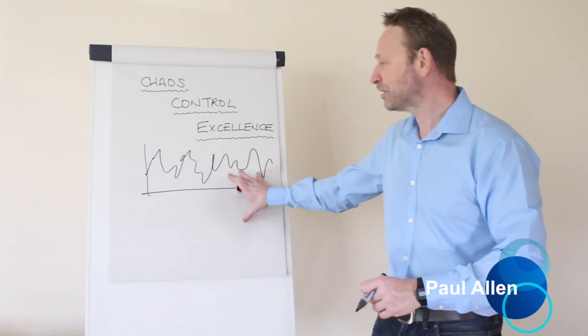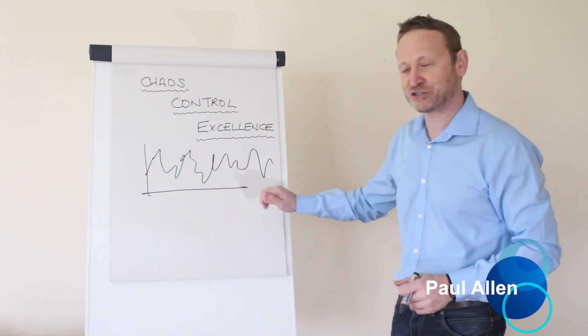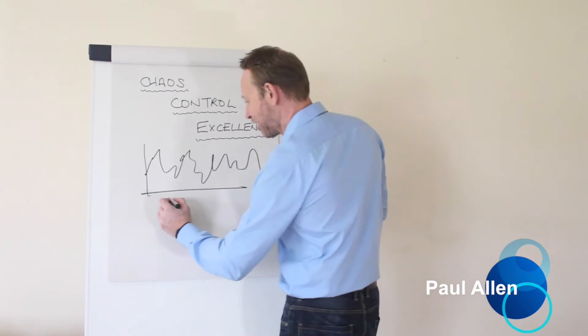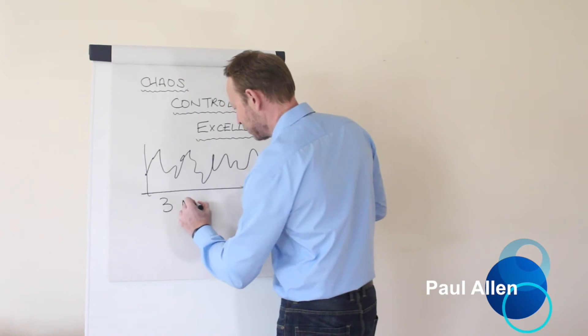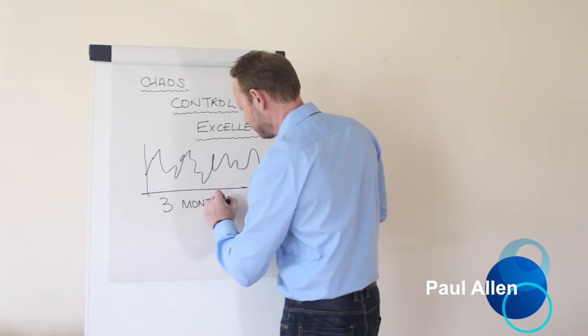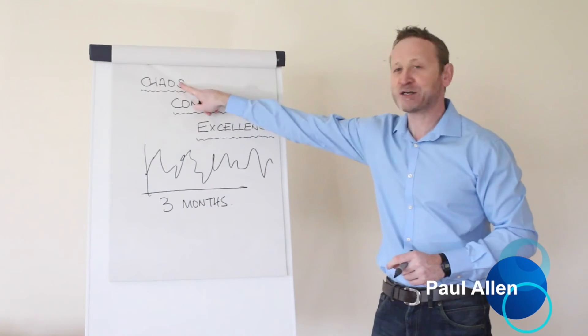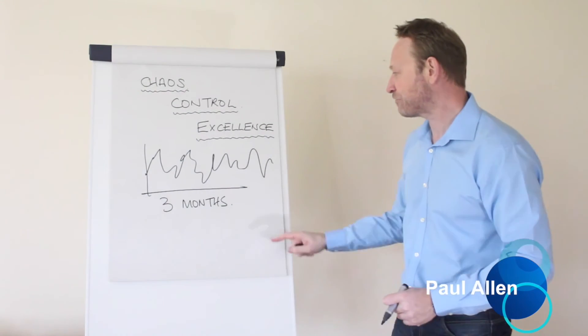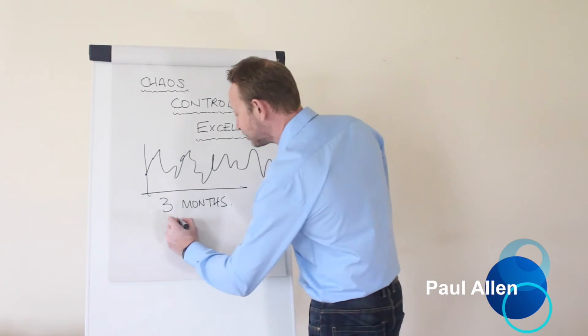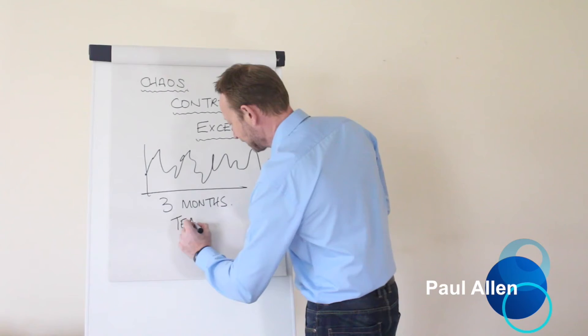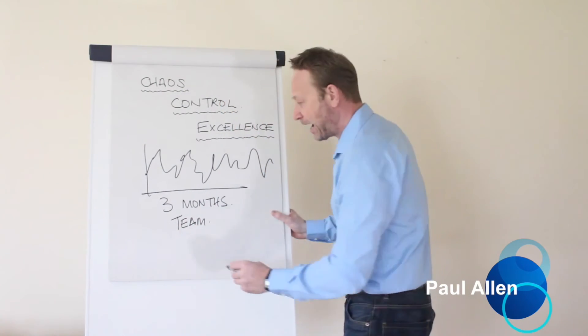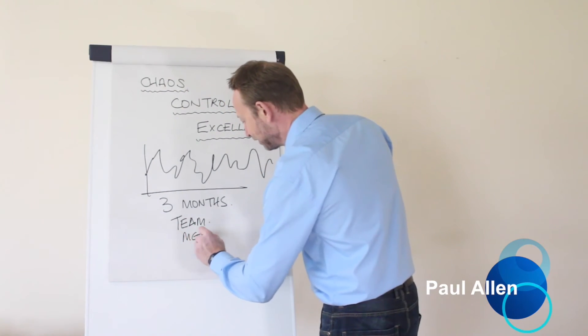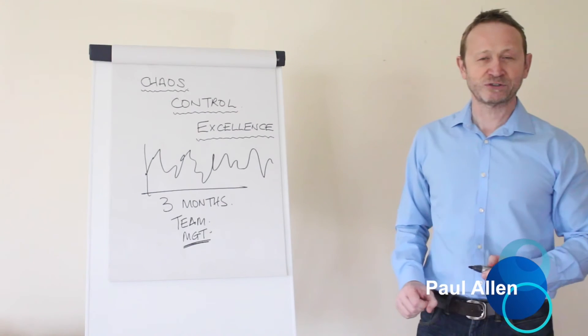If you take a project on, when the process looks like this, this problem is going to take three months to fix. To take a process of chaos to control is going to take three months to fix. It's going to need a team and it is the management's responsibility to sort it out.